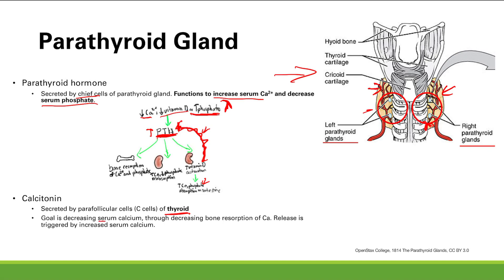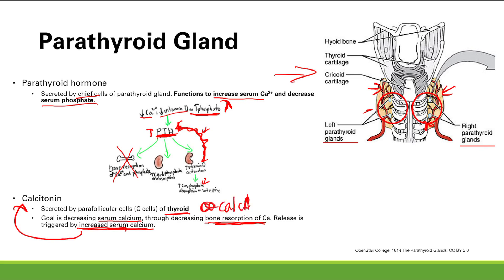The whole goal of calcitonin is to decrease serum calcium by decreasing bone resorption, resulting in less calcium release into the blood. The feedback: if you have too much serum calcium, you increase calcitonin. A helpful mnemonic is 'calcibonin' — you're putting calcium into the bones, so you don't get resorption of bones leading to calcium release into the blood.